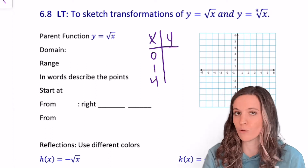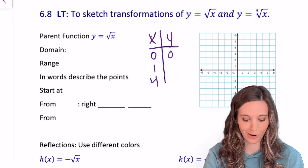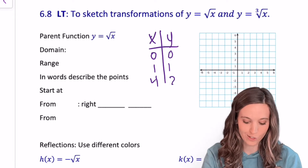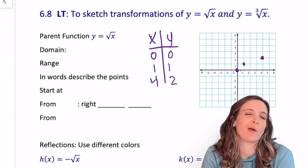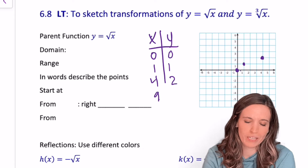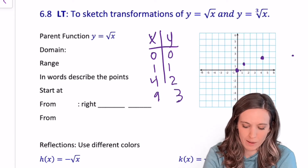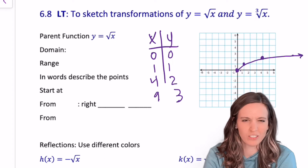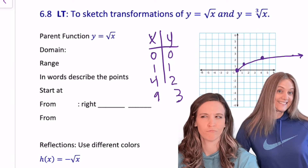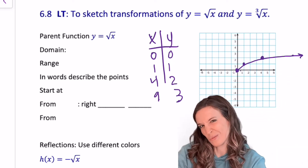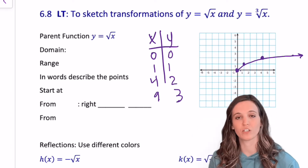Plugging those values into y equals the square root of x: the square root of 0 is 0, the square root of 1 is 1, and the square root of 4 is 2. The next perfect square is 9, giving us 3. Plotting these points gives us a sketch that looks kind of like a Nike swish — that's what all square root graphs look like.